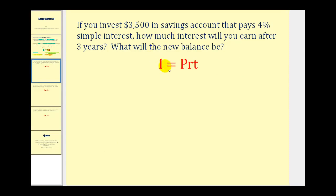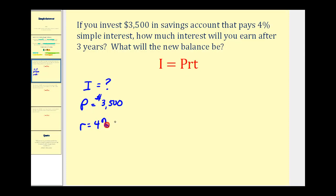For this situation we're trying to find I, or the interest. P, the principal or starting amount, would be three thousand five hundred dollars. R is the rate of return — four percent — but it must be expressed as a decimal, so this would be zero point zero four. And T is time in years, so T is equal to three years.